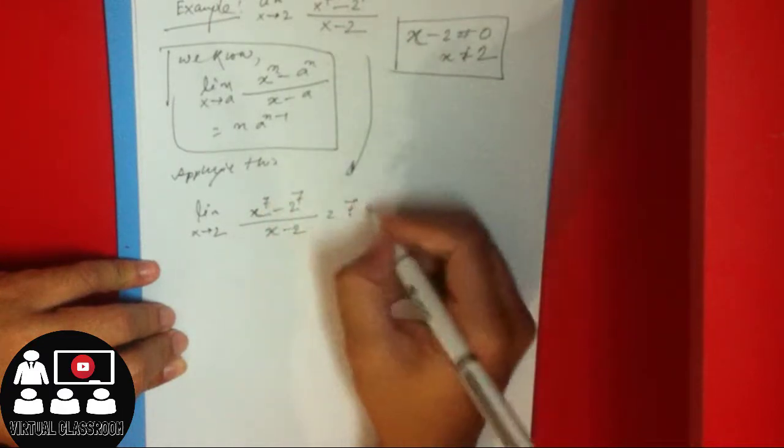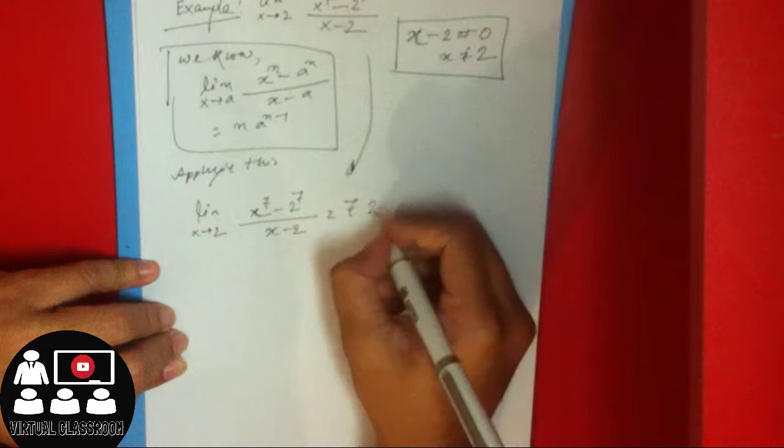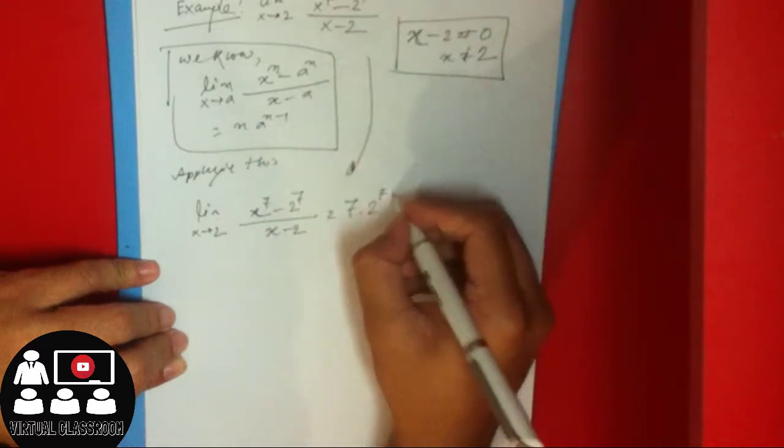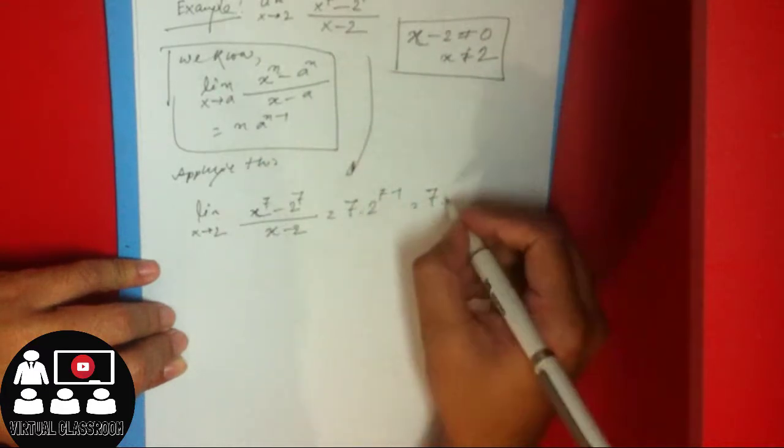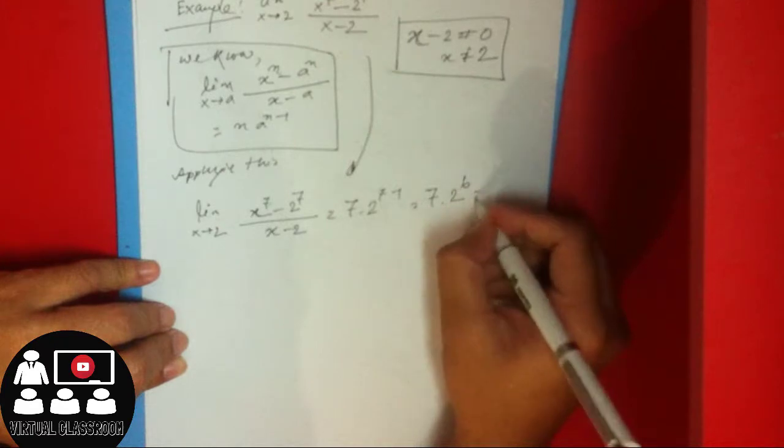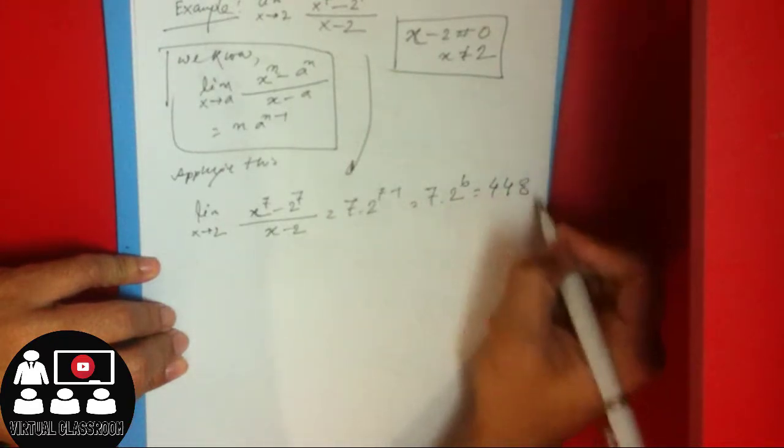This equals 7 times 2 to the power 6, which equals 448.